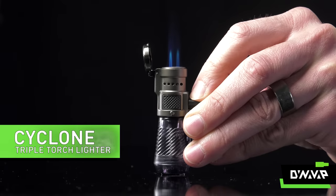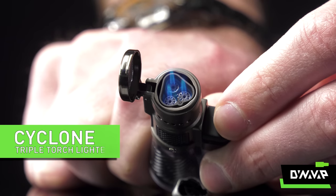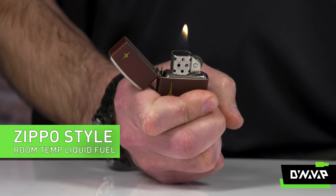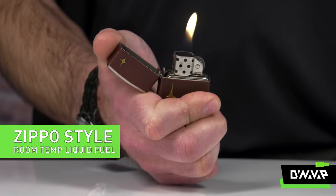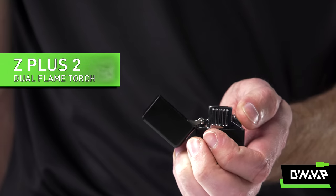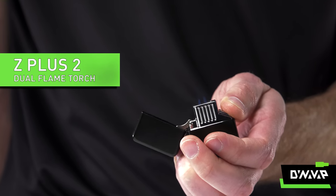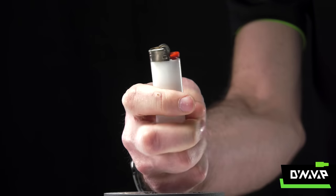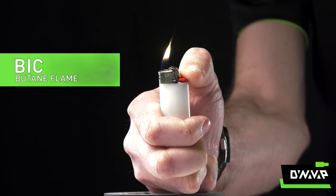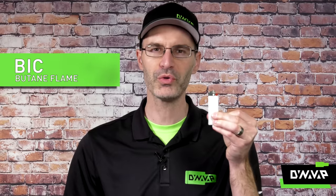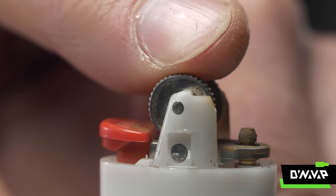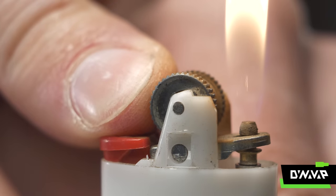This is a Cyclone, a triple flame torch lighter. This is a Zippo style lighter that uses fuel that is liquid at room temperature and pressure. This is a Z Plus. It looks like a Zippo, sounds like a Zippo, but it's actually a butane dual flame torch lighter. And this is a Bic lighter, probably familiar to most of you. It is also a butane lighter, but instead of having a torch flame jet style burner, it uses a very different type of burner.